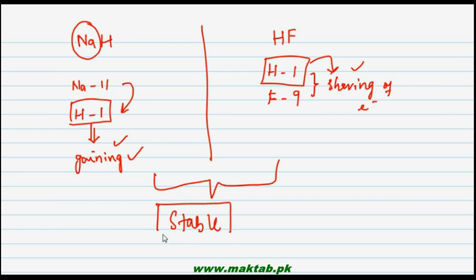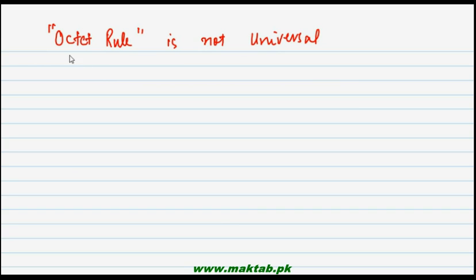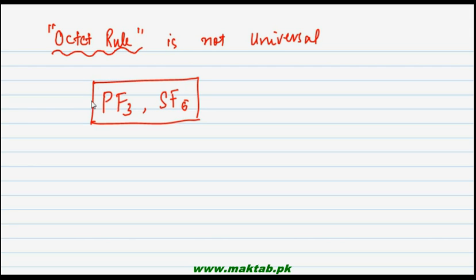آخری چیز یہ ہے کہ octet rule is not universal۔ Normally تو یہ rule follow ہوتا ہے لیکن تمام compounds کی chemical bonding کو اس rule سے explain نہیں کیا جا سکتا۔ For example PF₃ یا SF₆ جیسے compounds میں جو bonding ہوئی ہے that cannot be explained through octet rule۔ تو octet rule چھوٹے normal compounds میں exist کرتا ہے but it cannot be applied to all compounds۔ یہ ہمارا پہلا topic تھا جس میں ہم نے causes of chemical bonding پڑھی۔